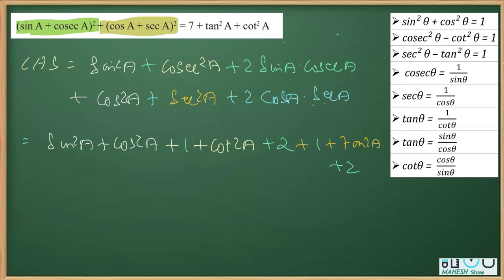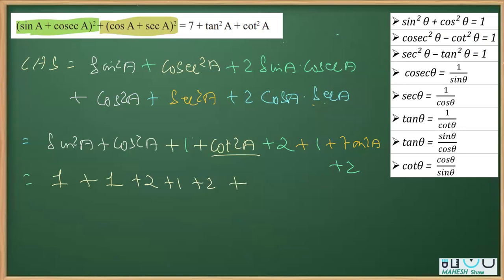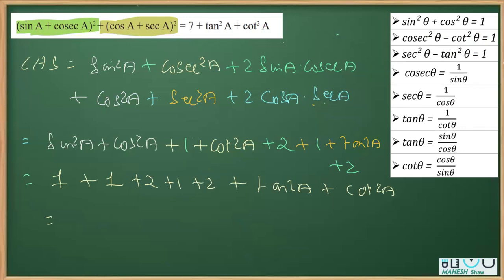Now adding the numbers: sin²a + cos²a equals 1, plus the 1 from cosec²a expansion, plus 2, plus the 1 from sec²a expansion, plus 2. Together: 1 + 1 + 2 + 1 + 2 = 7. So we get 7 + tan²a + cot²a, which equals the RHS. Hence proved.